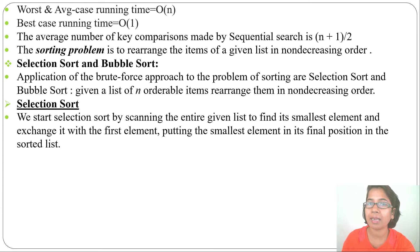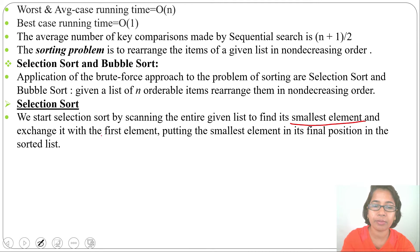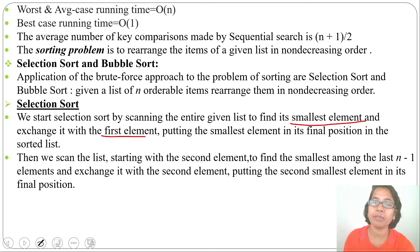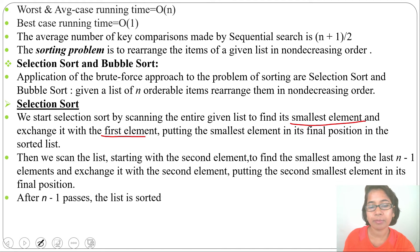Let's first understand selection sort theoretically. We start by scanning the entire given list to find the smallest element and exchange it with the first element. After that, the first element is sorted. Next, from the remaining elements, we again find the smallest element and swap it with the second position. This continues, and after n minus one passes the array will be fully sorted.